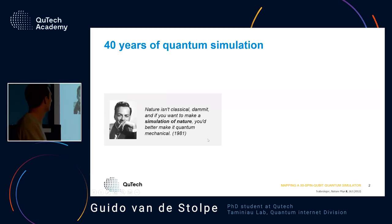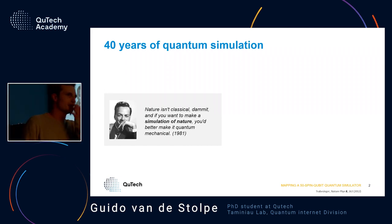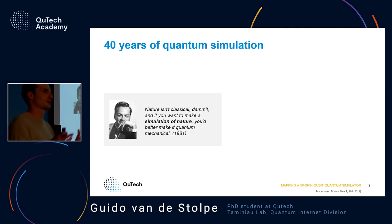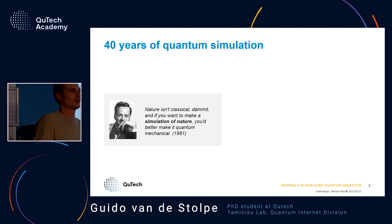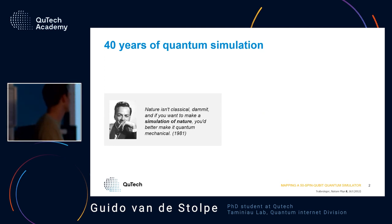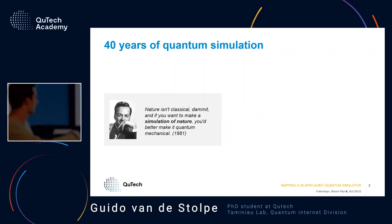I want to start with this quote from Richard Feynman, which basically states that if you want to simulate quantum mechanical systems, you better use a quantum mechanical computer. This is actually the first mention of using quantum systems to simulate other systems, and this was back in 1981.